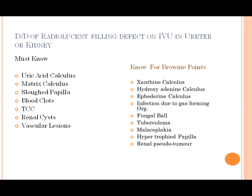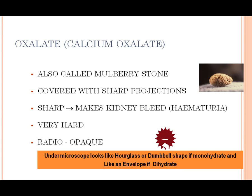The oxalate stone — this is a useful image for easy identification. This image shows calcium oxalate stone. It is also called a mulberry stone. It is shaped like a mulberry and covered with sharp projections.